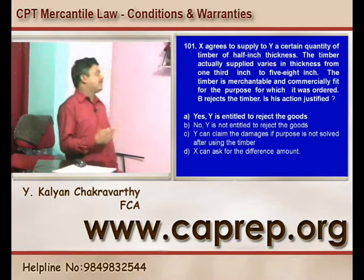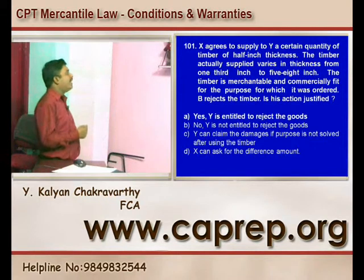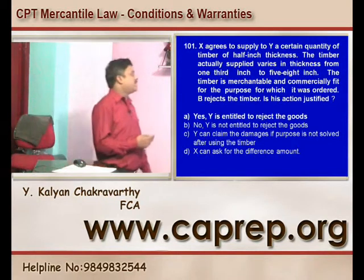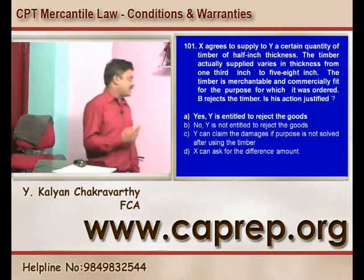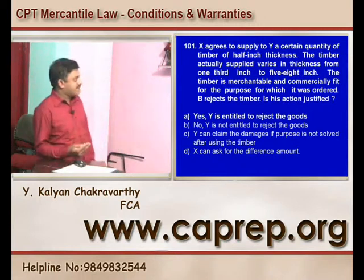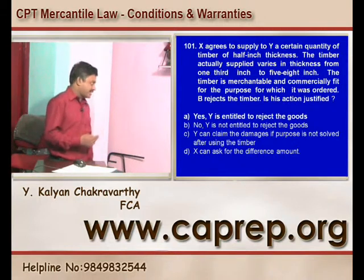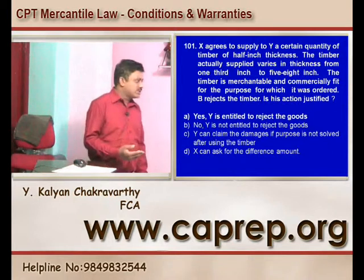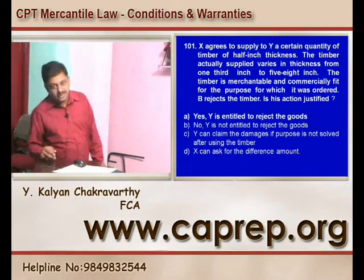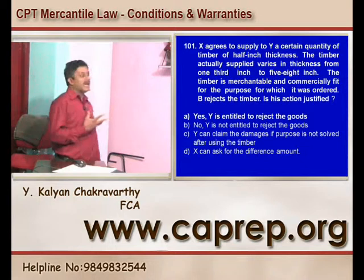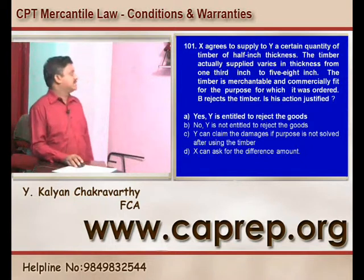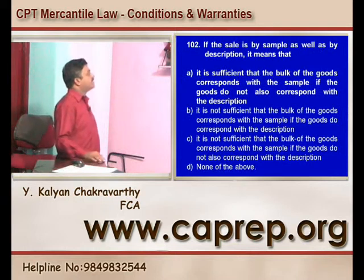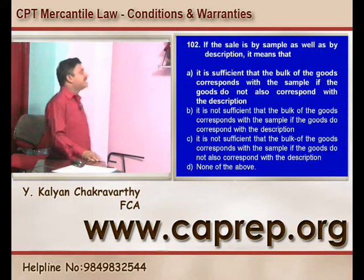Question 101: X agrees to supply to Y a certain quantity of timber of half-inch thickness. The timber actually supplied varies in thickness from one-third inch to five-eighth inch. The timber is merchantable and commercially fit for the purpose for which it was ordered. B rejects the timber — is his right justified? Yes, Y is entitled to reject the goods once goods supplied are not up to what was described. A is the right answer.